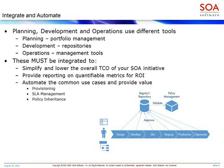The other thing that automation and integration actually provides is a lower total cost of ownership. The highest cost inside an organization is people. The other high cost is QA, support, and management. So if you can integrate your systems and automate a lot of your processes, that has two benefits: it lowers the cost of the initial development and deployment activity, and it also reduces the risk of any kind of failure in your production environment.